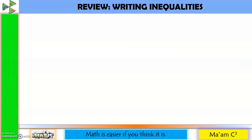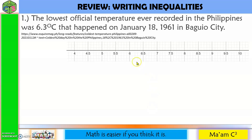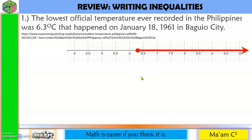As a review, let us write the corresponding mathematical sentence of the following. Number 1: the lowest official temperature ever recorded in the Philippines was 6.3 degrees Celsius, which happened on January 18, 1961 in Baguio City. Let us graph this and locate 6.3. Since this is the lowest, it cannot go to the left but instead to the right. So the inequality for this is T (temperature) is greater than or equal to 6.3.